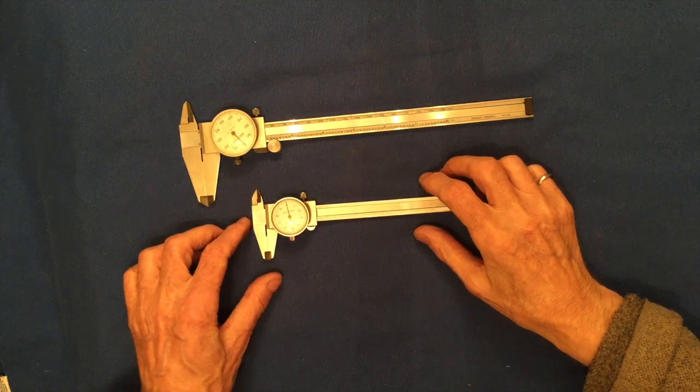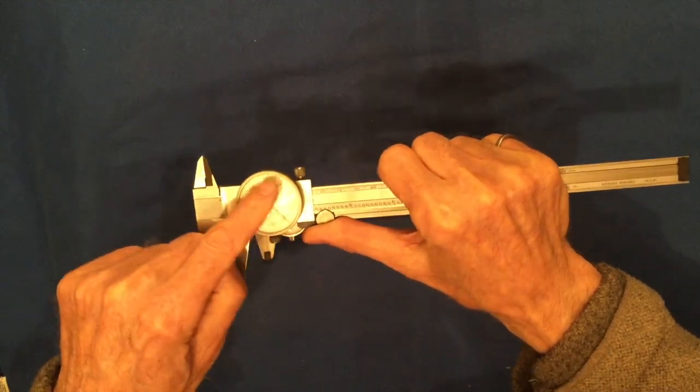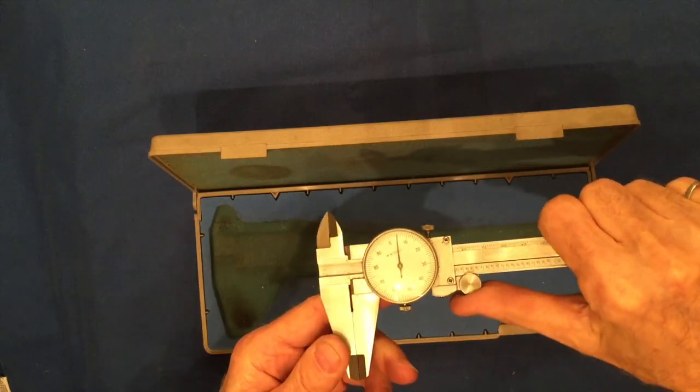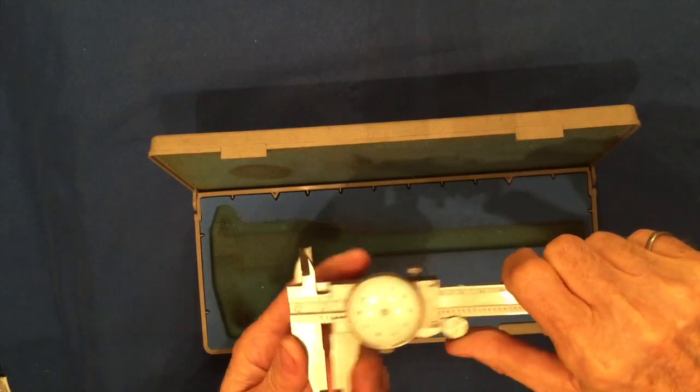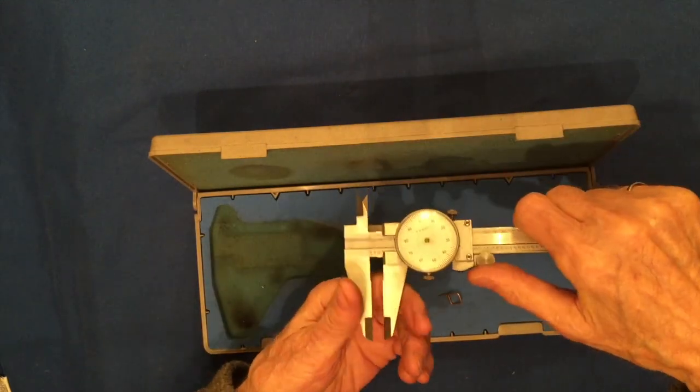These are the two I'm using all the time. This is a Mitutoyo and it has a full scale, which I like. Then there is another beauty, another 8 inch one, which does not stop at zero. Now it's zero. Do it again. Plus five. Not usable.